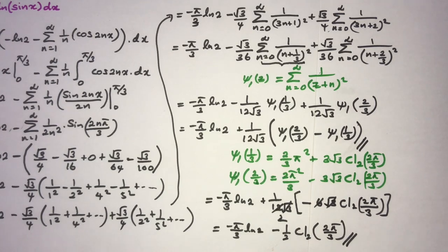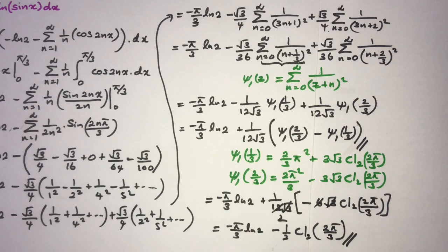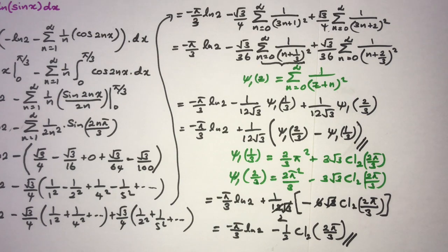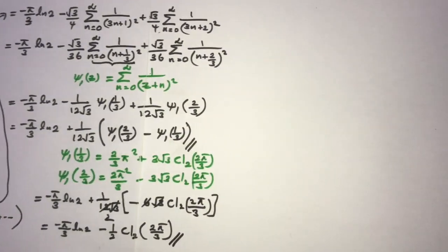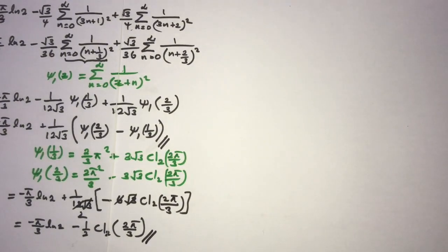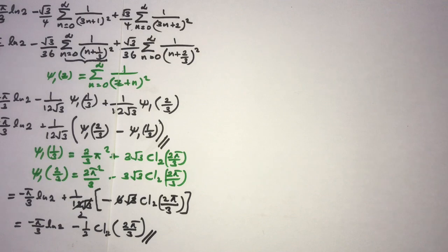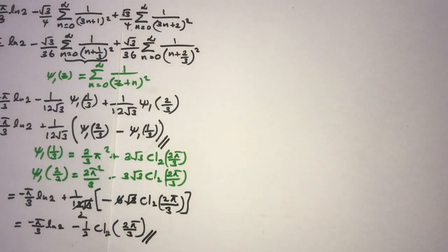We have now solved this integral using the Fourier series method. Now we are going to solve it using another method — the Clausen function.